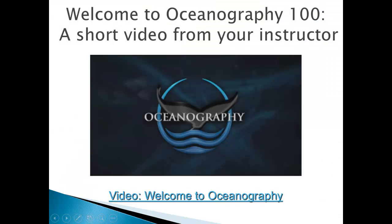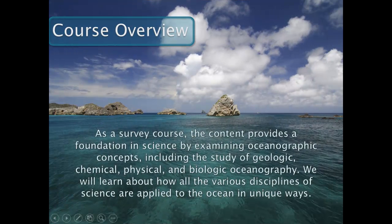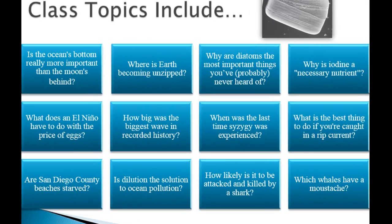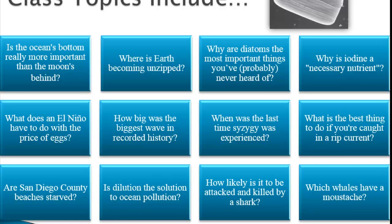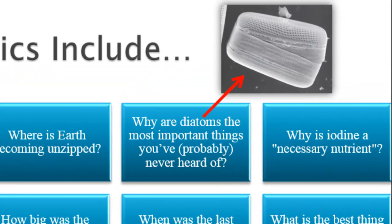So that's a little bit about what the course is all about. As an overview, the content examines all the different aspects of various sciences as they relate to the ocean — geologic, chemical, physical, and biological oceanography and how they relate to one another. Some class topics include those listed here. There's also a picture of a diatom on the page. I have a passion for diatoms — they're marine microscopic organisms that are incredibly abundant in the ocean. More about them when we get to chapter four.